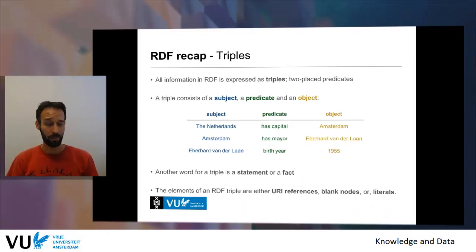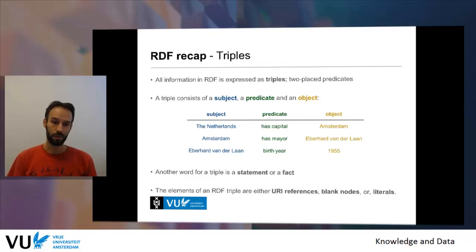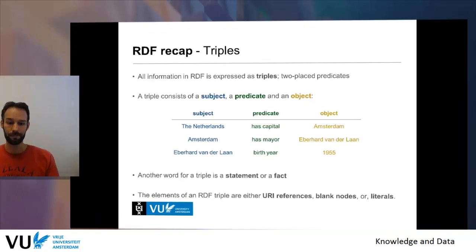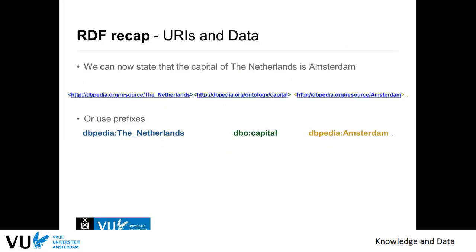Let's do a short recap of RDF. RDF consists of triples: a subject, a predicate, and an object. These triples sometimes share the same subject and object. For example, the Netherlands has capital Amsterdam, and Amsterdam in turn has a mayor, and that mayor has a birth year. So these triples together form a graph. With these triples we make statements — for example, that the Netherlands has capital Amsterdam, with the Netherlands as subject, capital as predicate, and Amsterdam as object.